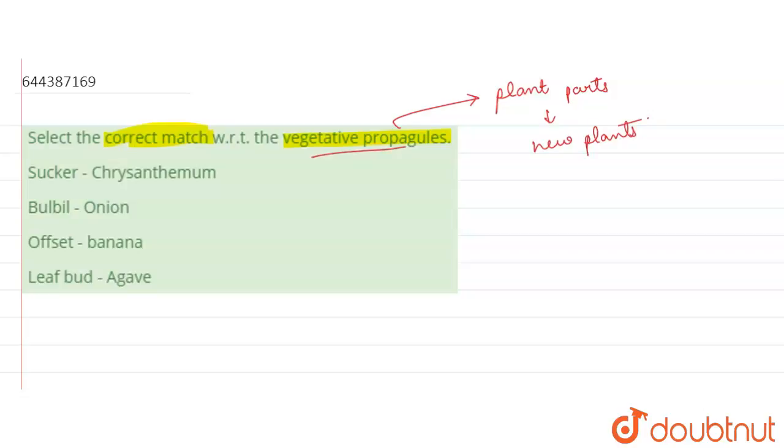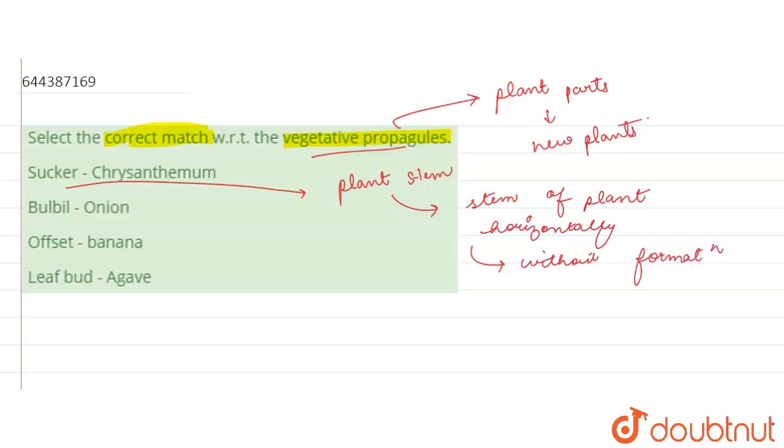The first one is sucker and chrysanthemum. Now what is sucker? Sucker is a plant stem that grows below, from below the stem of a plant or from underground, and it grows horizontally without the formation of root. So this grows from the bottom of the plant horizontally without the formation of the roots and these are called as the sucker. They are found in chrysanthemum and this pair is correct.